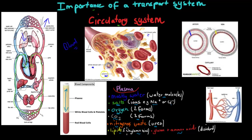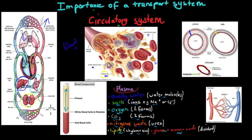Then when blood moves past the digestive tract, we've got lipids, glucose and amino acids from our food coming into the blood. At the liver, those nutrients — lipids, glucose and amino acids — go into the liver, but at the liver urea is produced. Urea is the nitrogenous waste that's pumped into the blood at the liver, and then the urea will be removed at the kidneys. So basically things go in and things go out as the blood moves past the body.